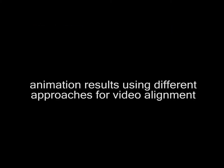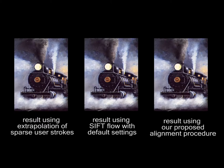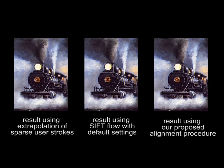We now compare the animation results obtained using three different approaches for the video alignment step of our proposed animation pipeline. The leftmost result is generated using linear extrapolation of sparse user strokes for alignment of the example video. The result shown at the center is generated using optical flow with its default settings. The result to the right is generated after aligning the example video using our proposed alignment method.